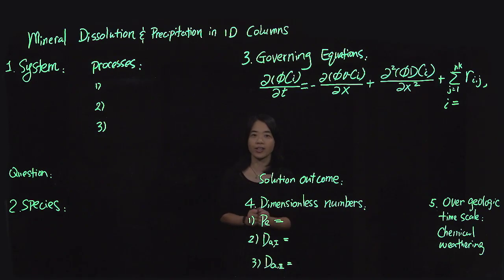OK, so this lesson we're going to talk about mineral dissolution and precipitation in 1D columns. This is different from the previous lessons on mineral dissolution precipitation, which was in batch reactor well-mixed systems. So there's really no dimension, or you can call it zero dimension.